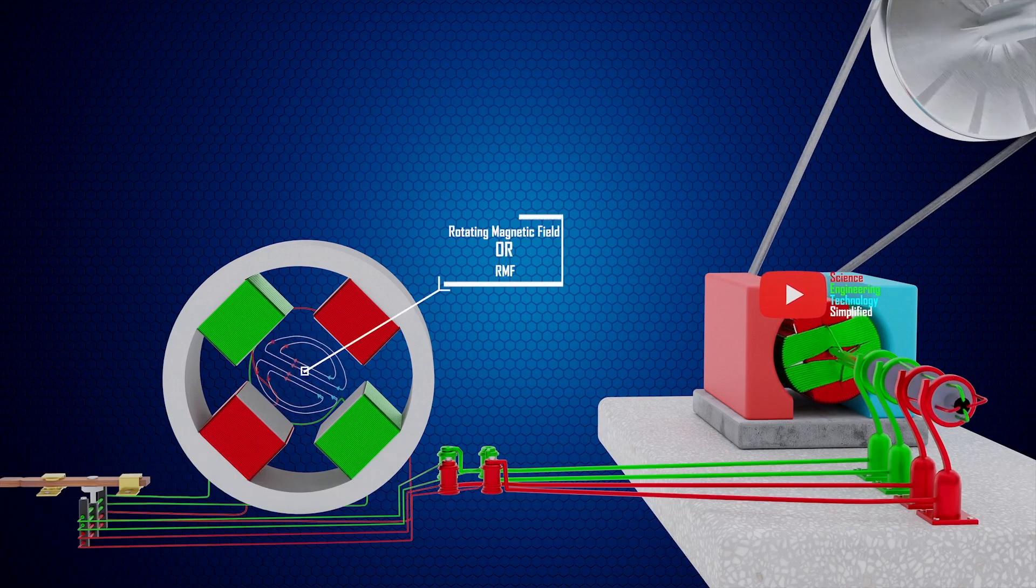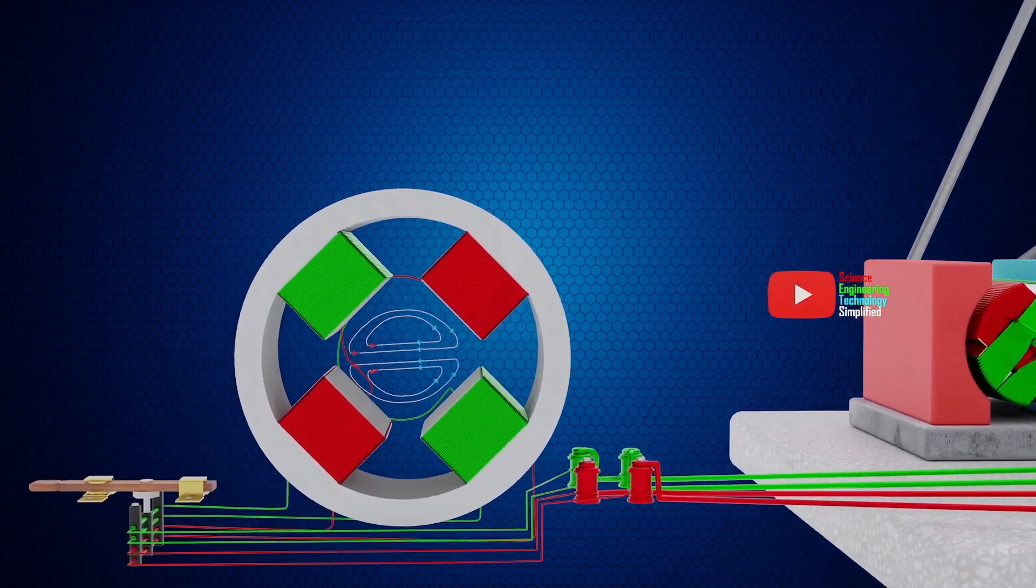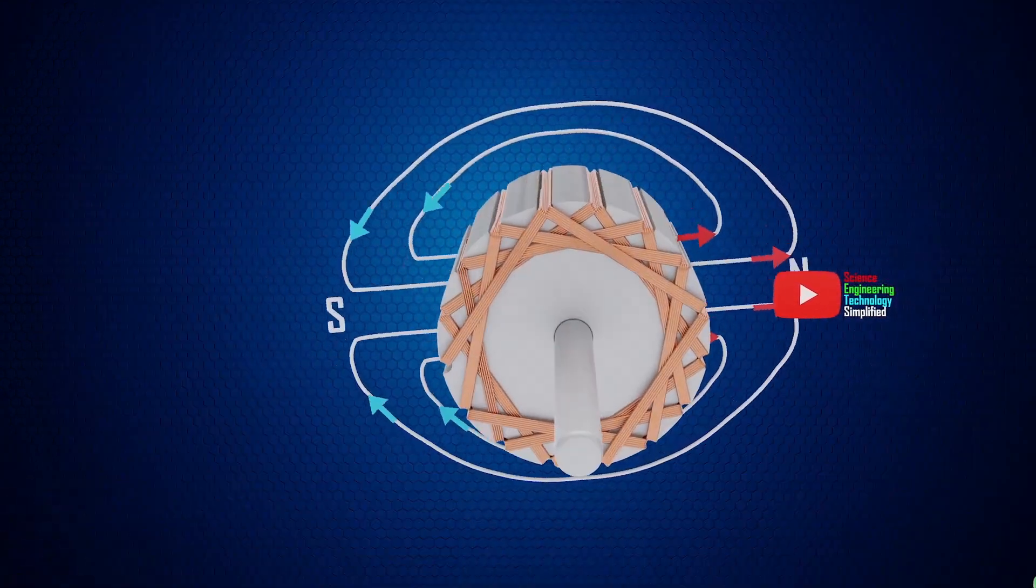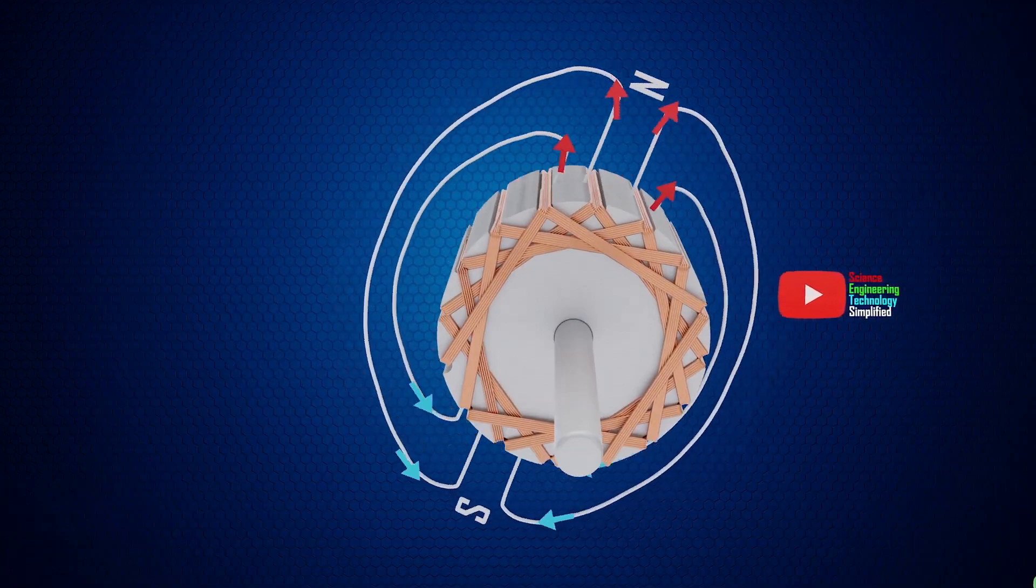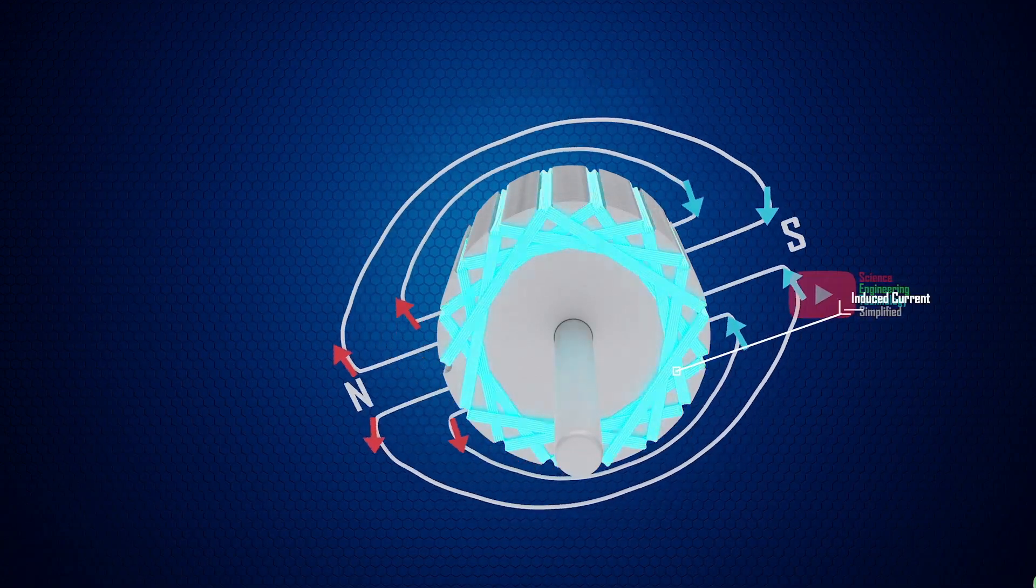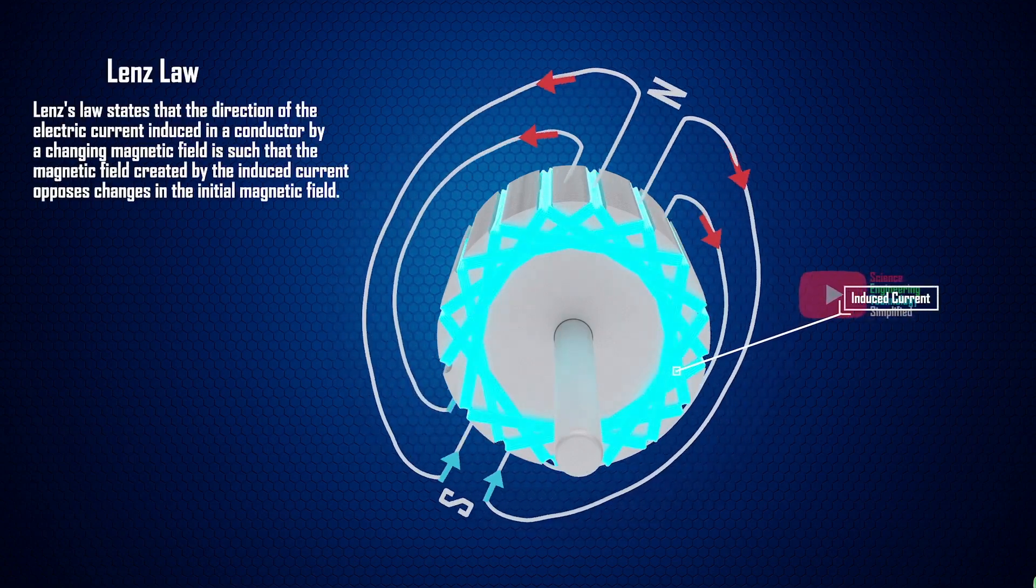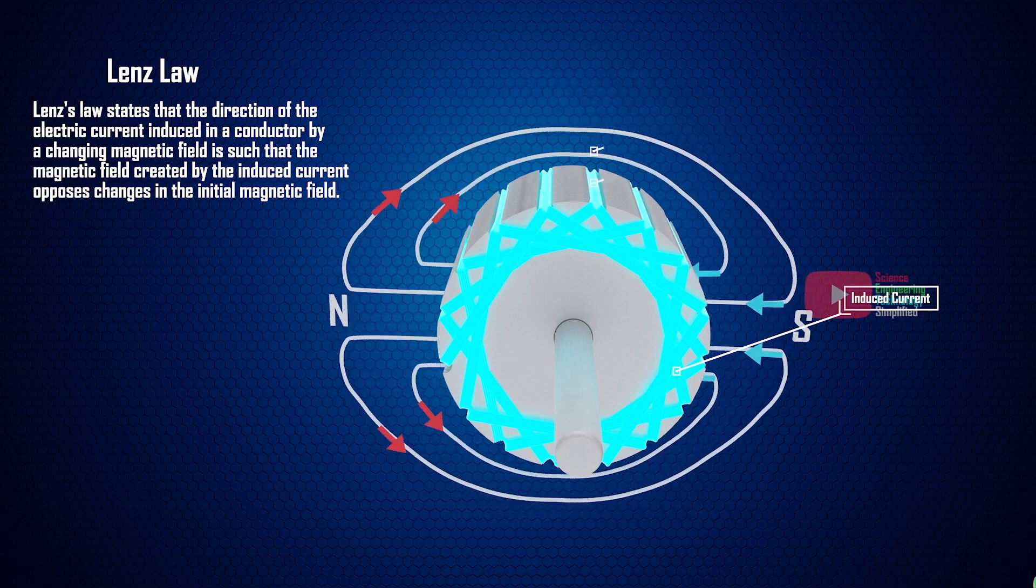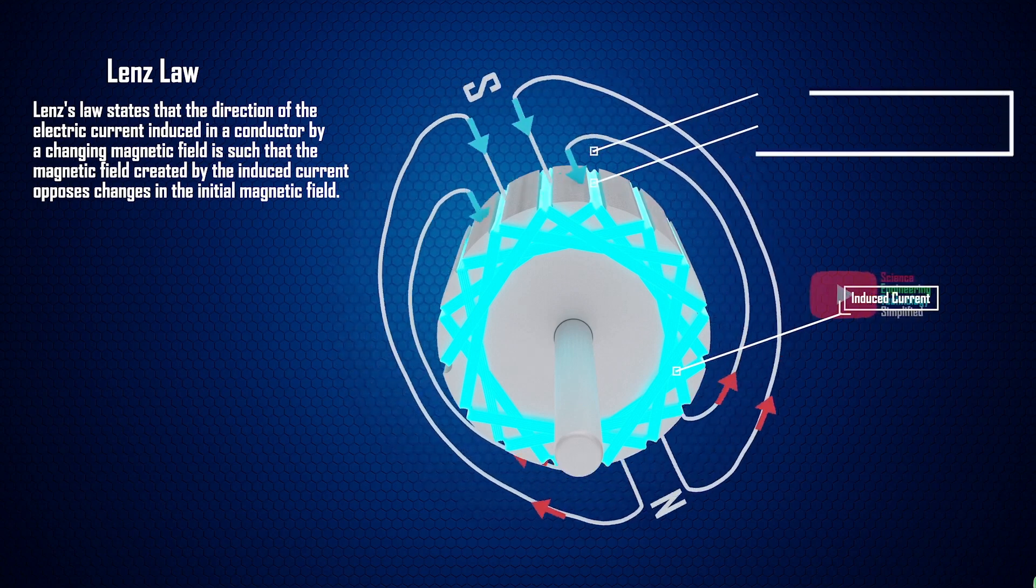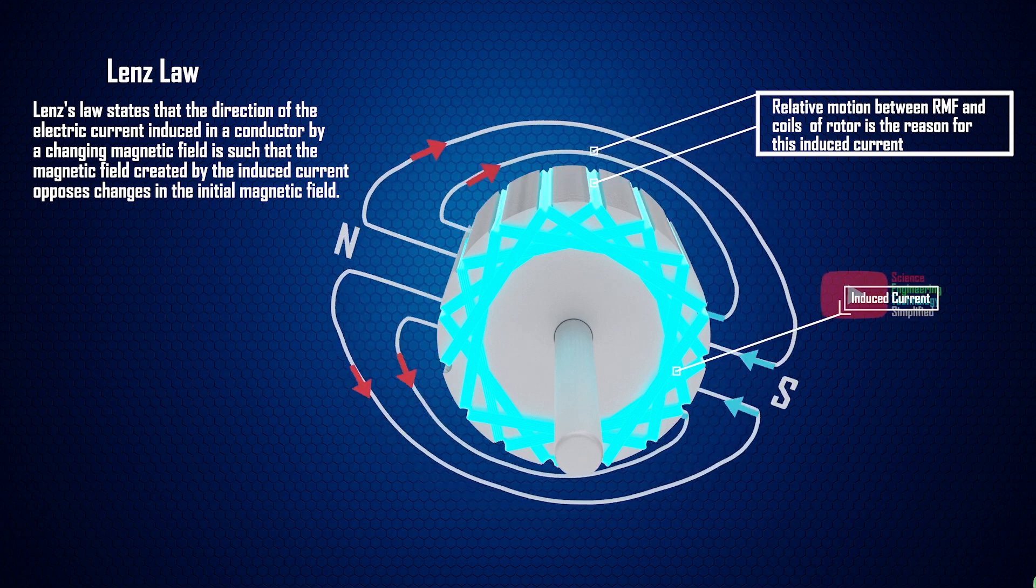This is called rotating magnetic field, RMF. When the coils of the rotor cut this magnetic field, according to Faraday's first law of electromagnetic induction, a current is induced in the coils. According to Lenz's law, this induced current opposes the cause that induced it. Here, the cause for the induction of this current is the relative motion between the rotating magnetic field and the coils of the rotor.